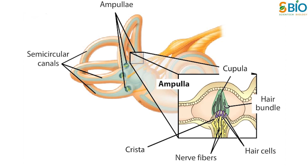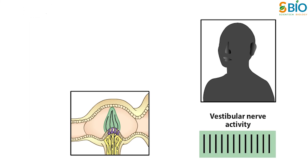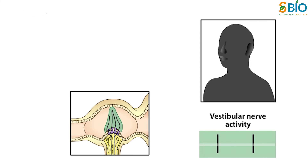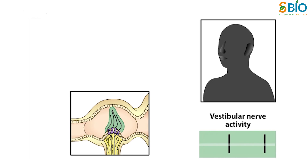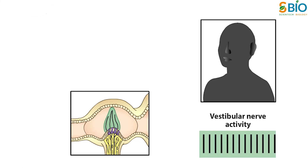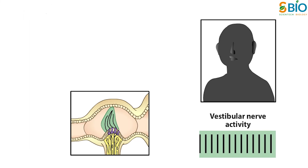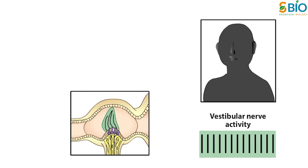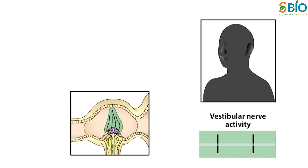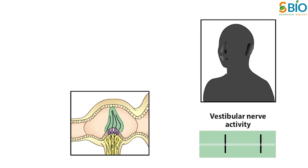As a result, the relatively compliant cupula is distorted by the movement of the endolymphatic fluid. When the head turns in the plane of one of the semicircular canals, the inertia of the endolymph produces a force across the cupula, distending it away from the direction of head movement and causing a displacement of the hair bundles within the crista. In contrast, linear accelerations of the head produce equal forces on the two sides of the cupula, so the hair bundles are not displaced.